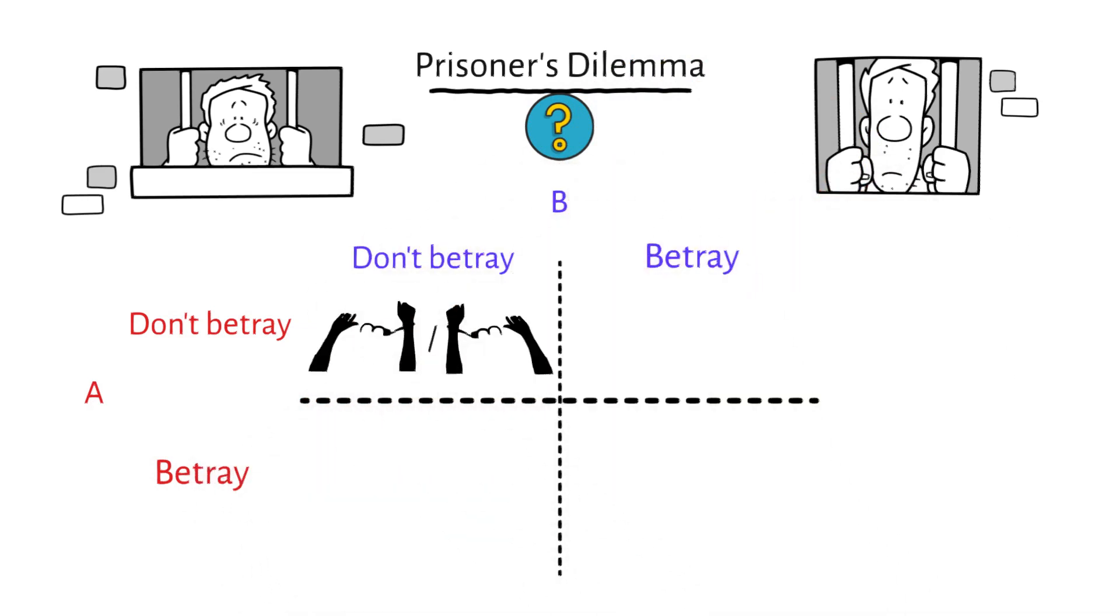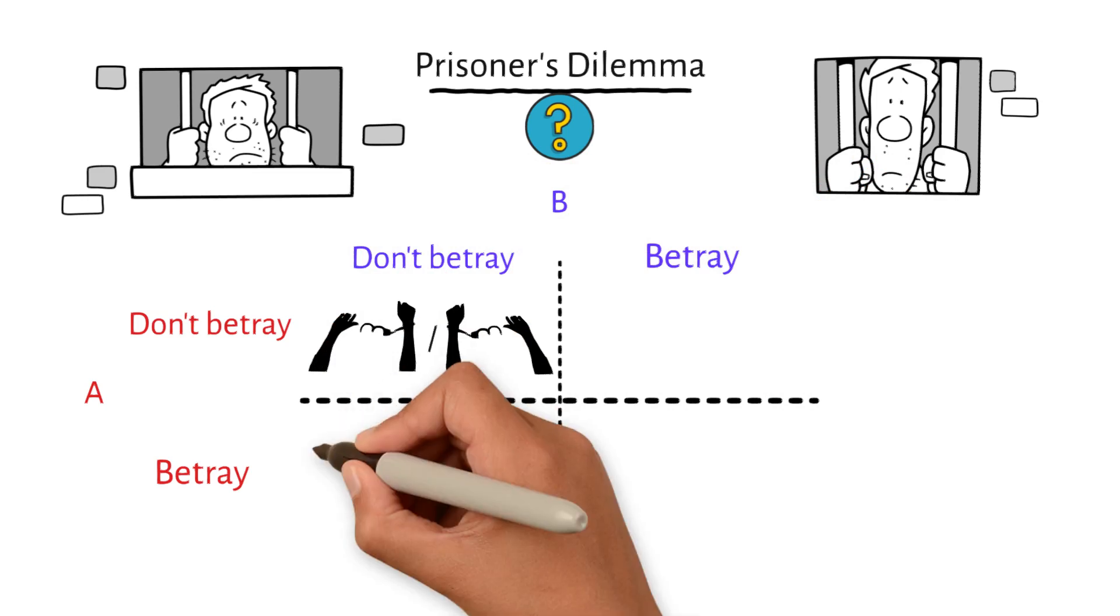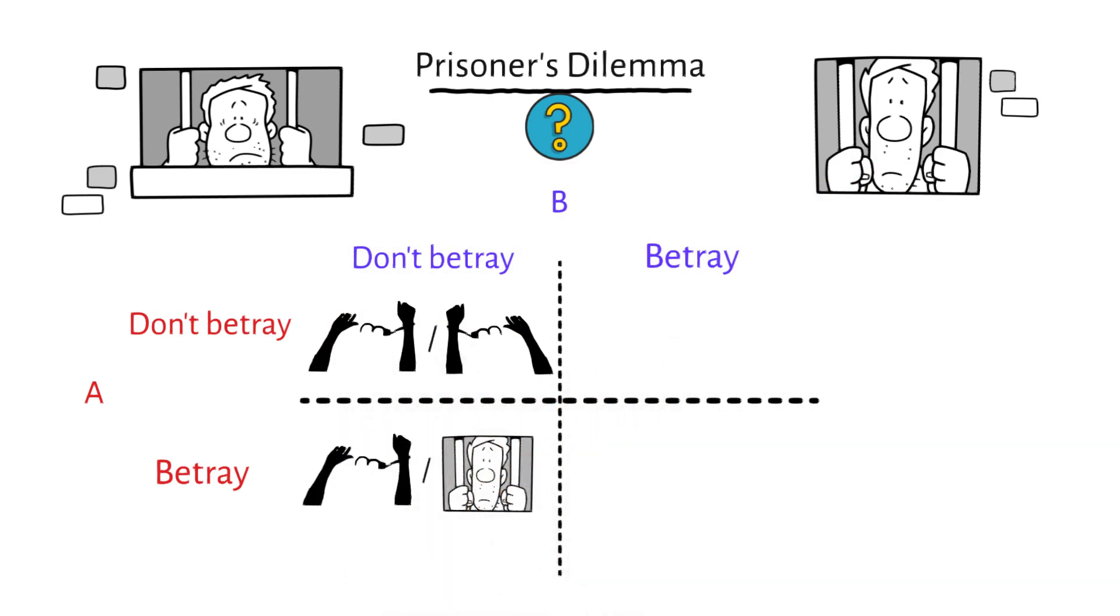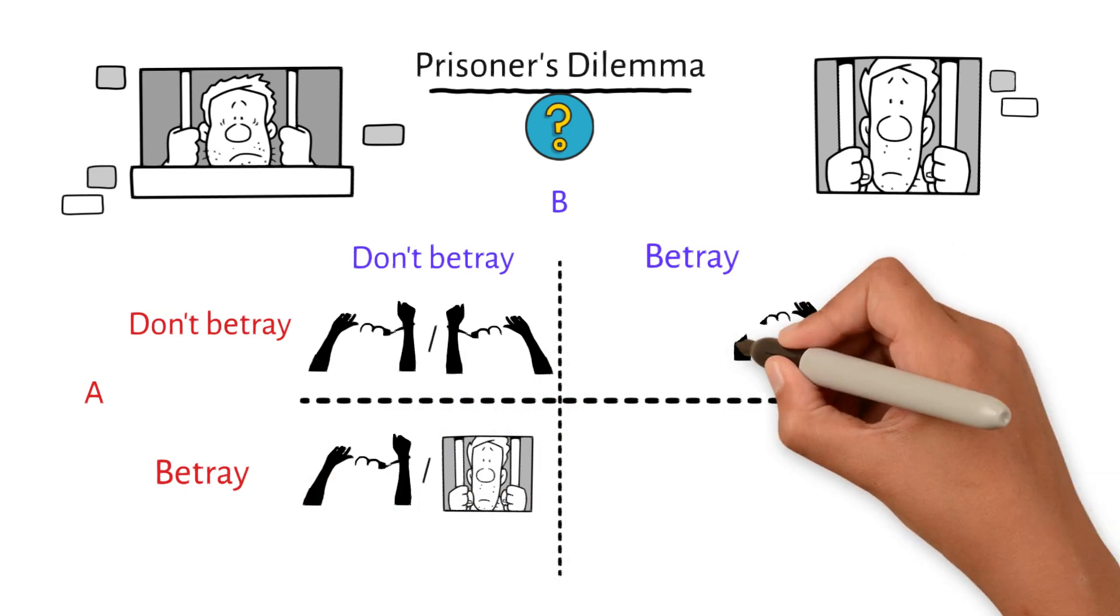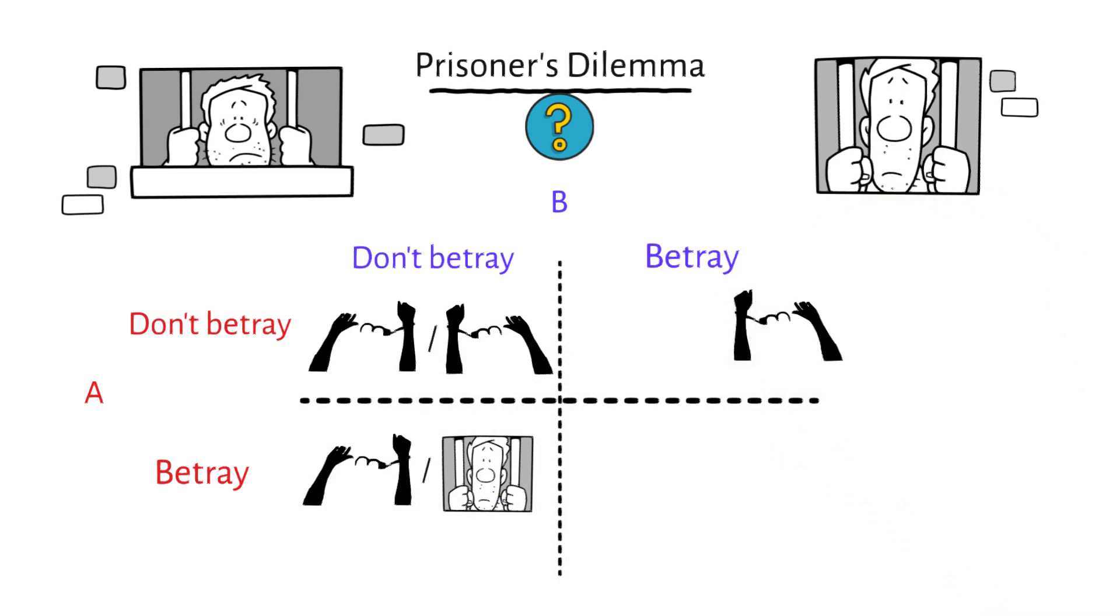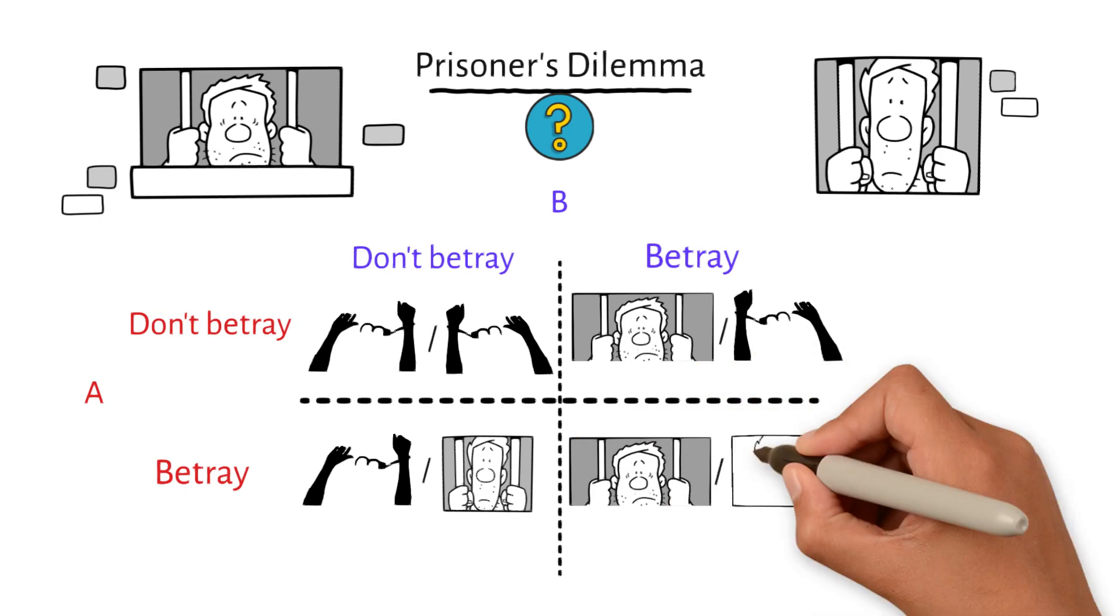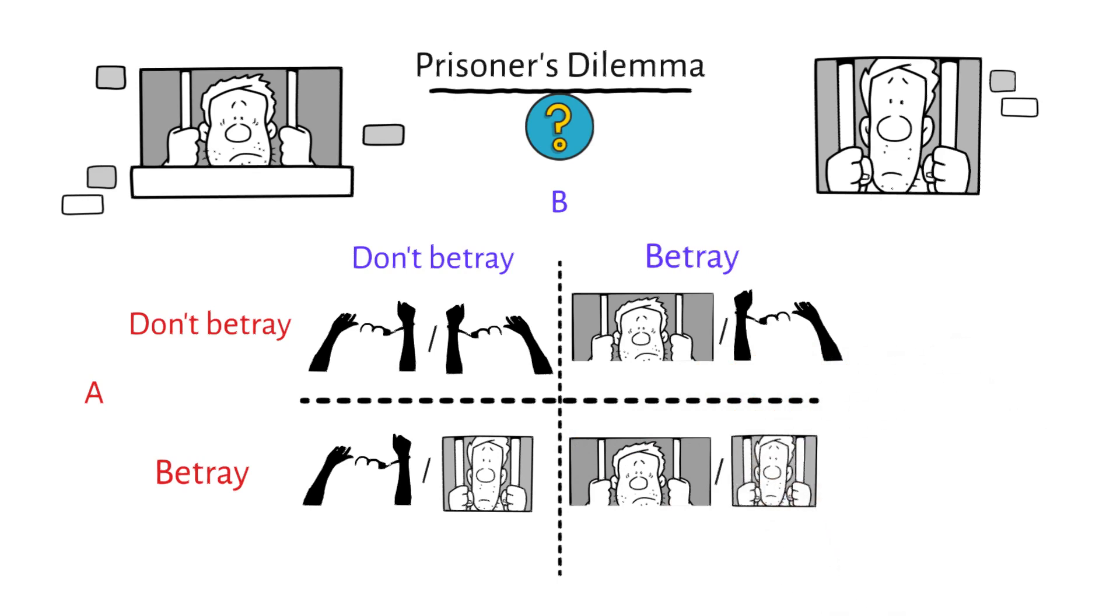If neither prisoner talks, they will both be let go. If prisoner A betrays prisoner B, prisoner A will be set free, while prisoner B will get a long sentence. If B betrays A, B will get away with it, while A will spend a long time in prison. If they both decide to betray each other, they will both go to prison for much less time.